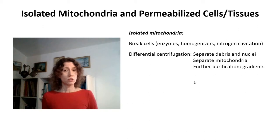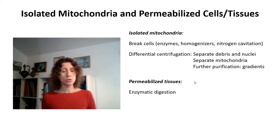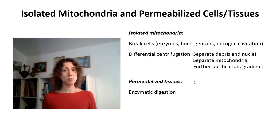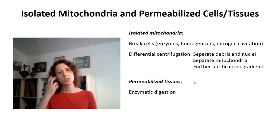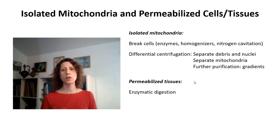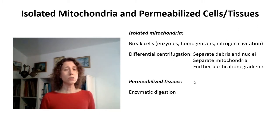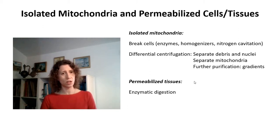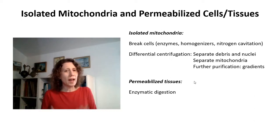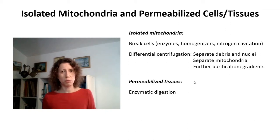There's another way to study mitochondria within cells: permeabilizing the plasma membrane of the cell or tissue and looking at mitochondria inside these permeabilized cells or tissues. This is interesting because you need a lot less tissue, you don't lose any mitochondria through differential centrifugation, and mitochondrial architecture is conserved within the cells — while you're still able to access these mitochondria directly within the permeabilized tissue.